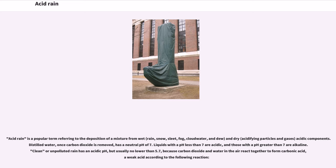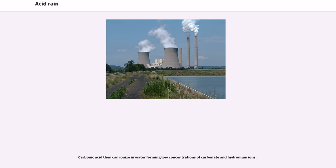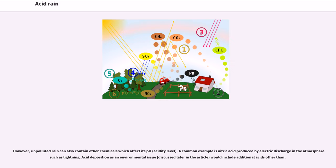Liquids with a pH less than 7 are acidic, and those with a pH greater than 7 are alkaline. Clean or unpolluted rain has an acidic pH, but usually no lower than 5.7, because carbon dioxide and water in the air react together to form carbonic acid, a weak acid. Carbonic acid then can ionize in water forming low concentrations of carbonate and hydronium ions. However, unpolluted rain can also contain other chemicals which affect its pH acidity level. A common example is nitric acid produced by electric discharge in the atmosphere such as lightning.